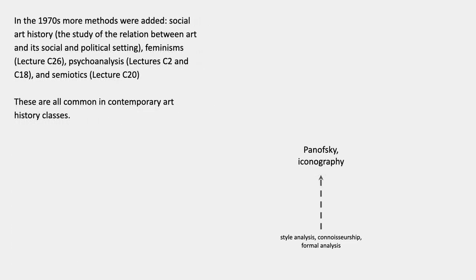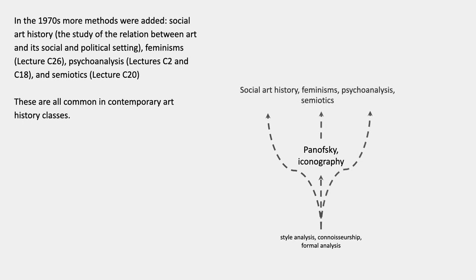In the 1970s more methods were added: social art history, which is the study of the relation between art and its social and political setting; feminisms; psychoanalysis; and semiotics. These are all still common in art history classes today. So this is a branching tree model with all of those at the top in no particular order.